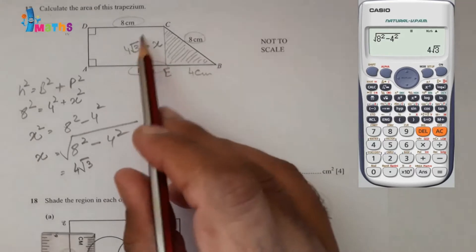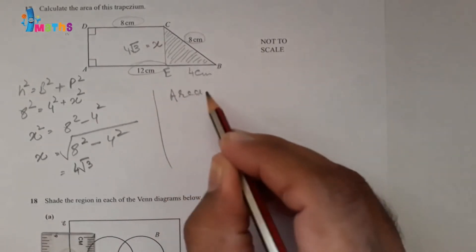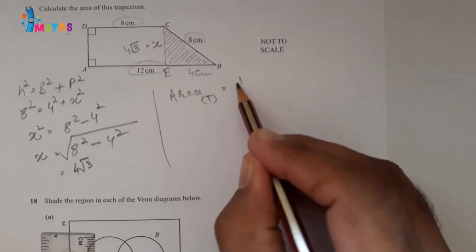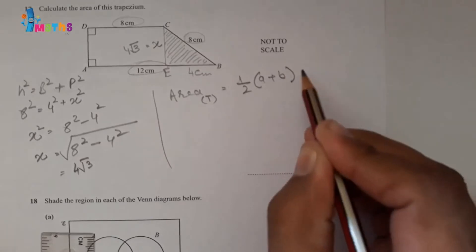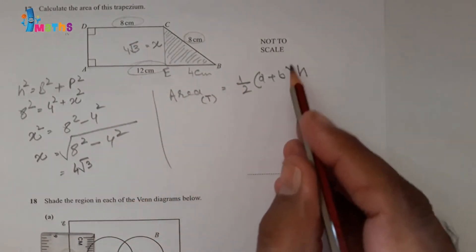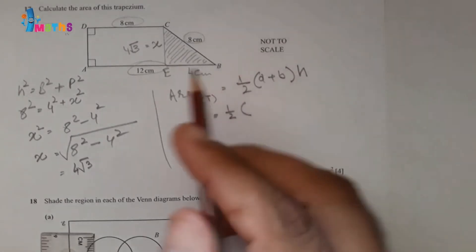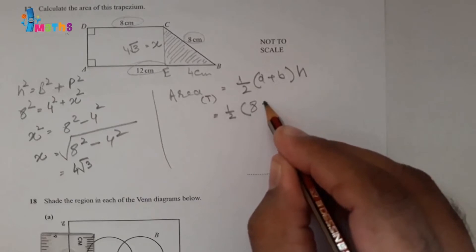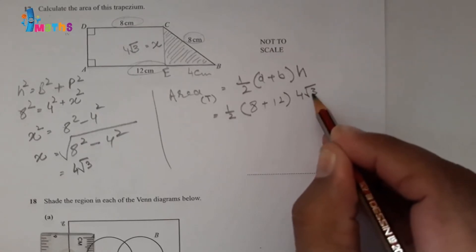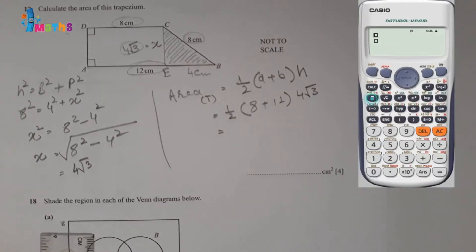Now we can find the area of the trapezium. Area of trapezium equals one half times (a plus b) times h, where a and b are the opposite parallel sides and h is the perpendicular height. Replacing the values: one half times (8 plus 12) times 4 root 3, which is the perpendicular height.